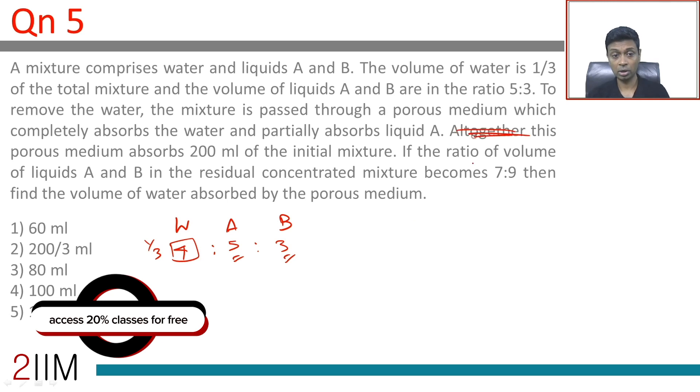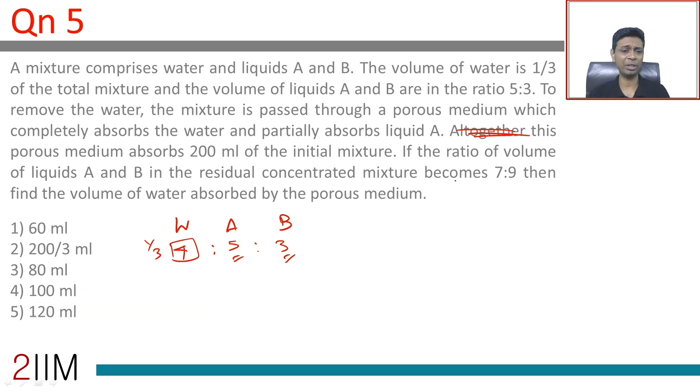The ratio of volume of liquids A and B in the residual concentrated mixture becomes 7:9. Find the volume. This is our starting point.